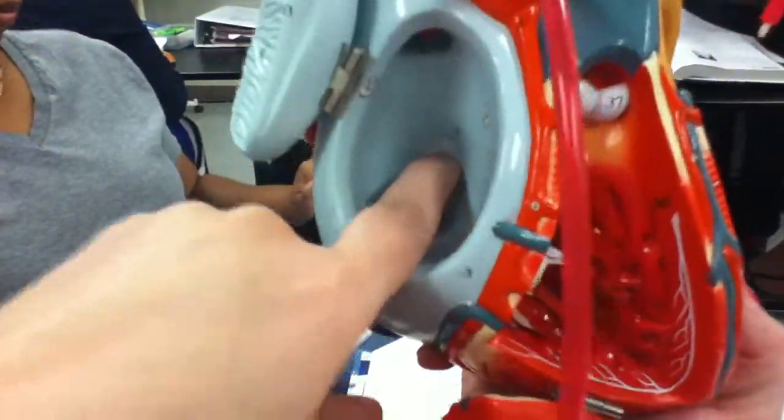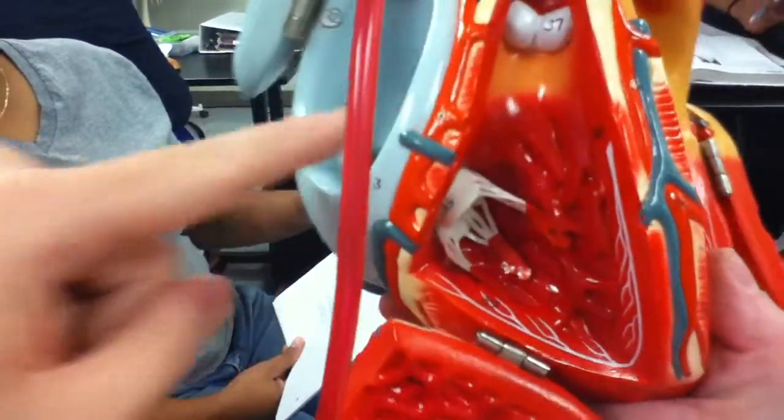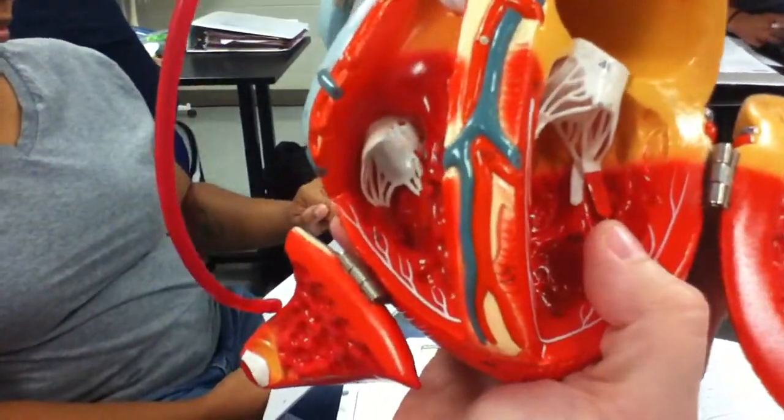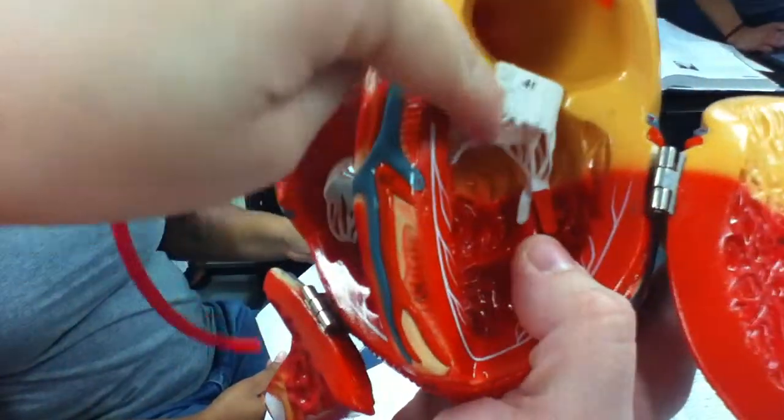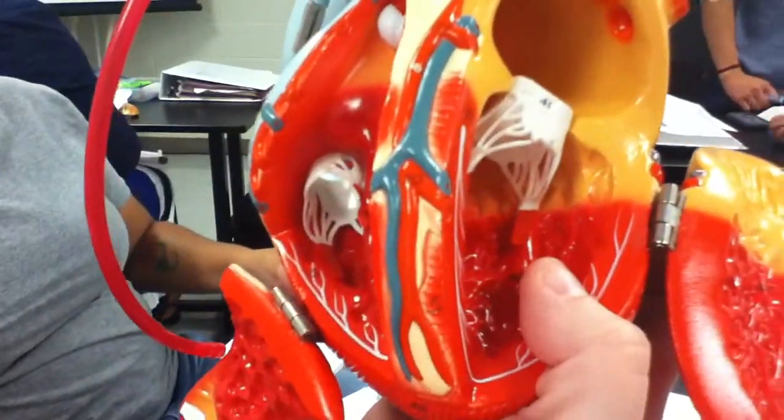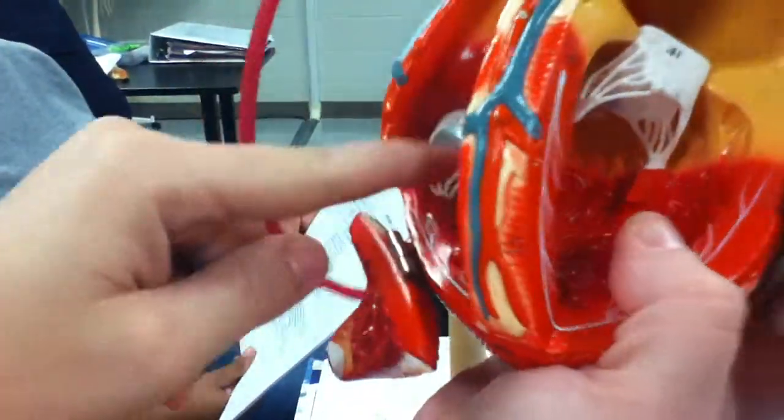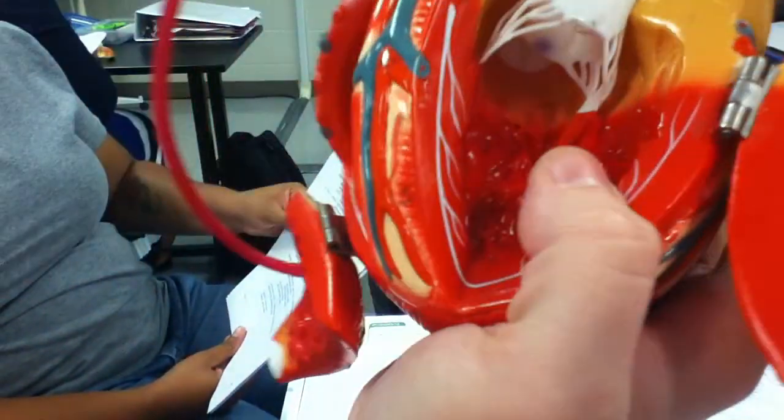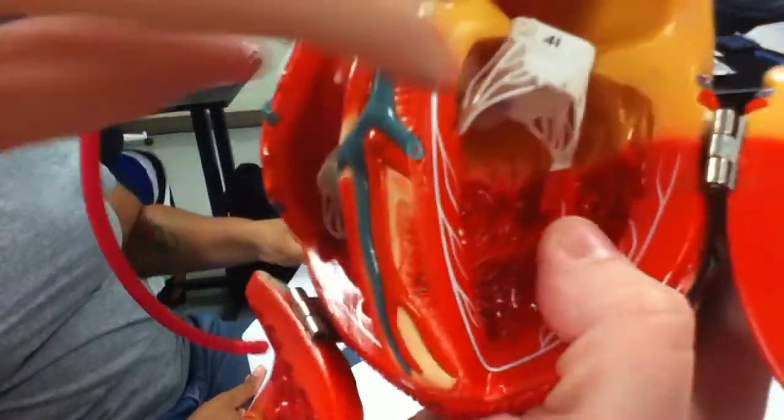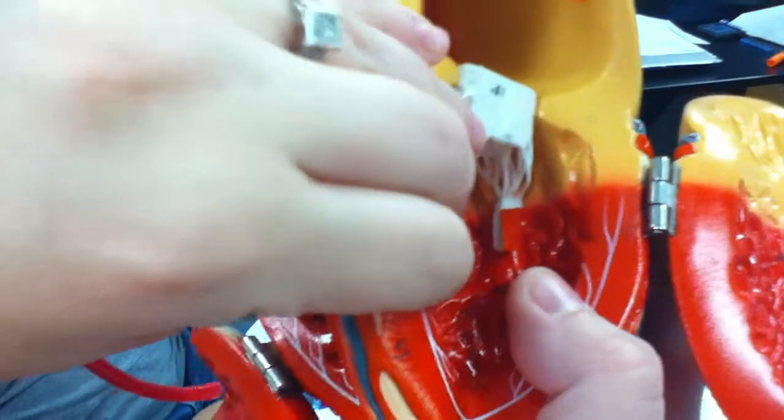Fossa ovalis is here. Right and left ventricles are the bottom chambers. Chordae tendineae are these low lines that come off the valves. Papillary muscles are the muscles that connect the tendineae to the heart. The interventricular septum is this wall that separates the ventricles.